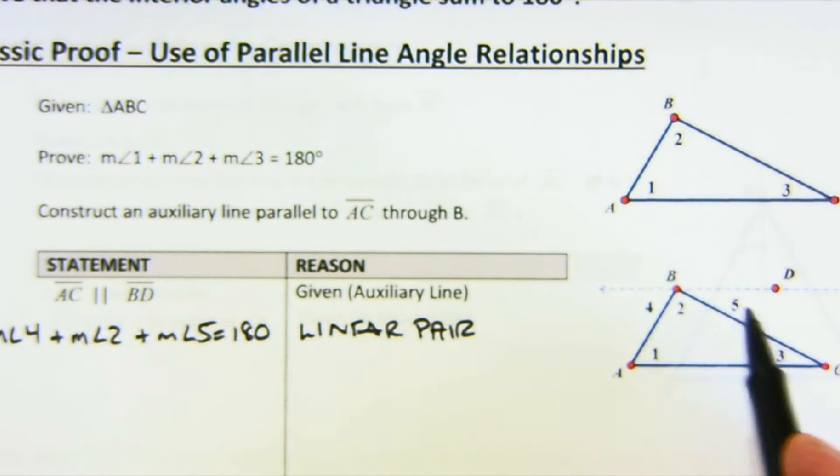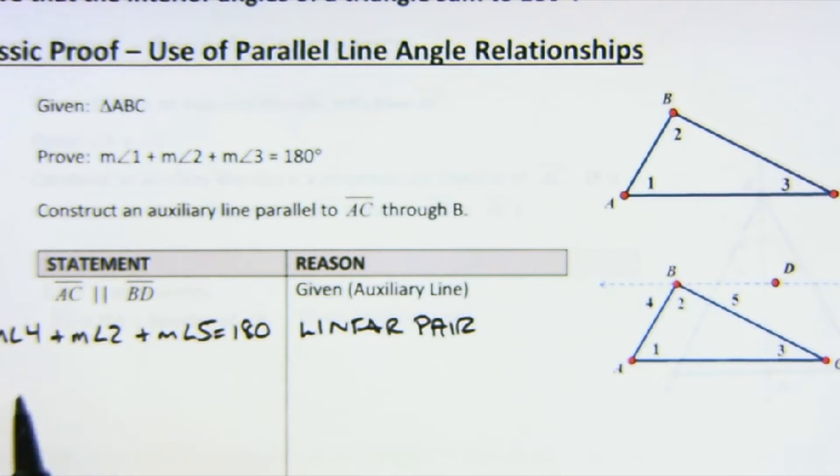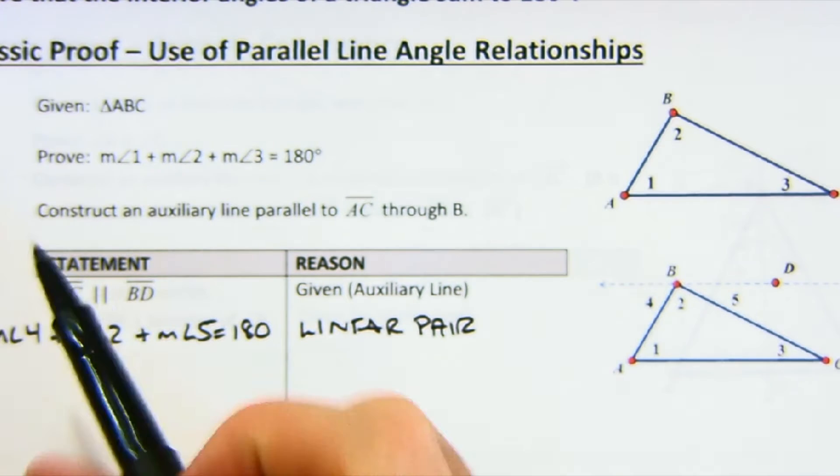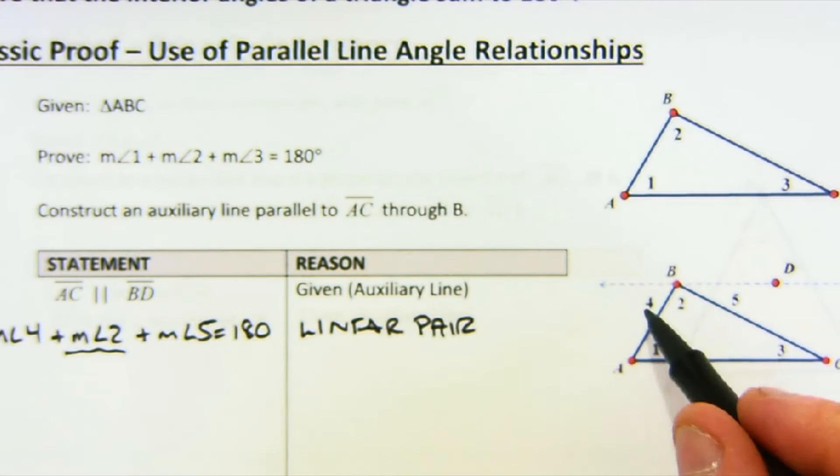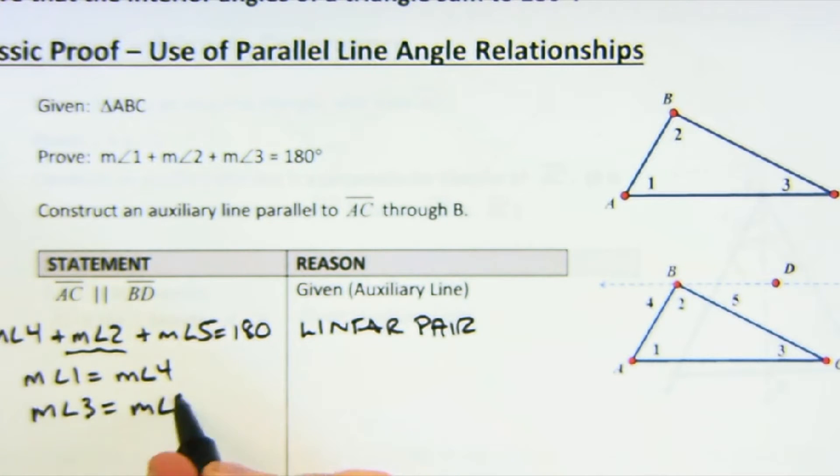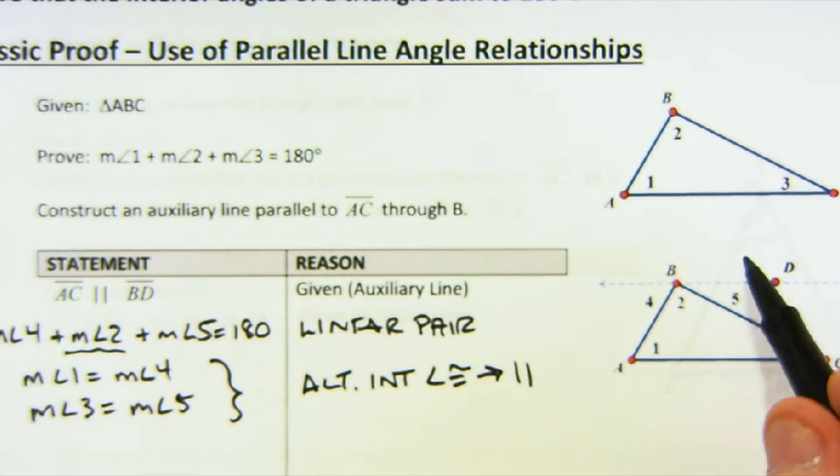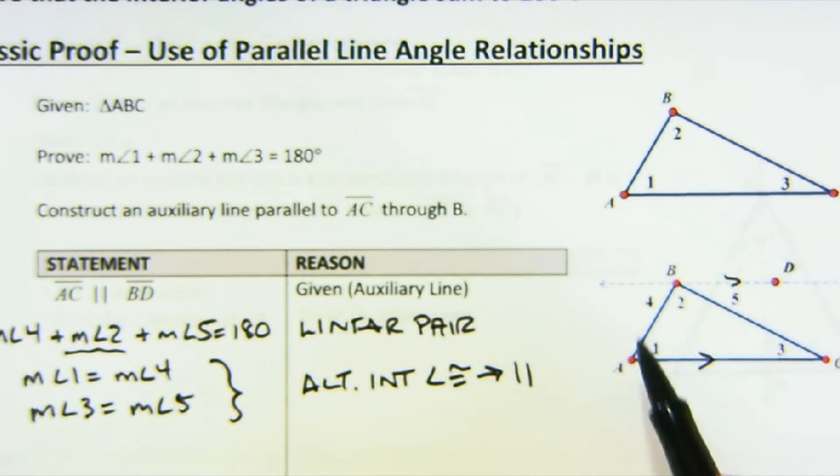So I see the line—4, 2, and 5 all form that straight angle. And then what I now notice is I'm kind of close to what I want. I want 1, 2, and 3 equals 180. I notice that it's 4, 2, and 5. This is actually all ready to go, so I just need to talk about 4 and 1. Well I notice that 1 is equal to 4, and actually I know that 3 is equal to 5 for the same reason—both of these have to be equal because they are alternate interior angles that are congruent with parallel lines. There's the parallel lines.